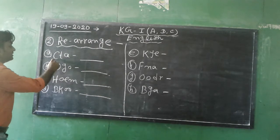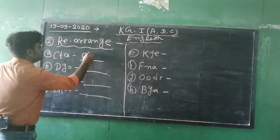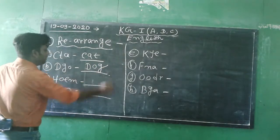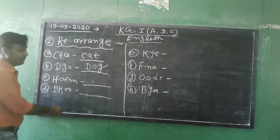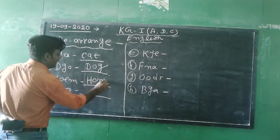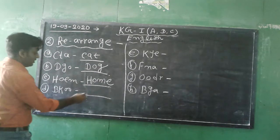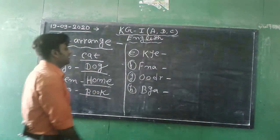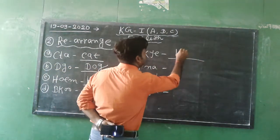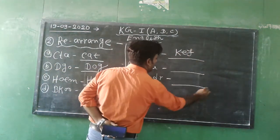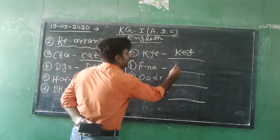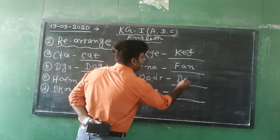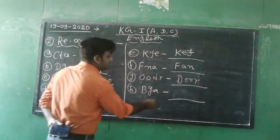Okay, this is the word. First, CTA and the correct answer is CAT. Next, DGO, correct answer is DOG. Next, HOEF, correct answer is HOME. Next, BKOO, correct answer is BOOK.